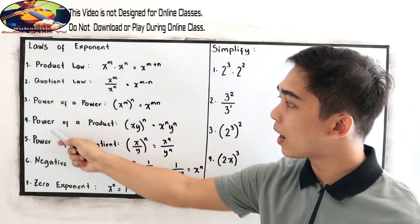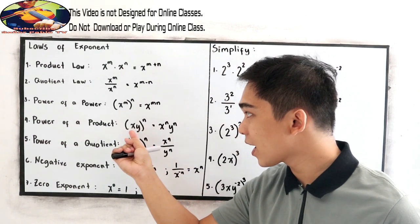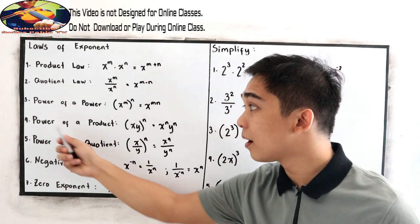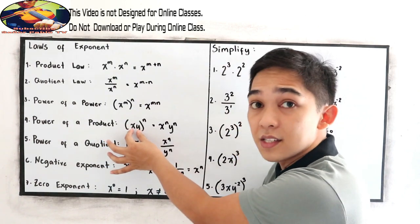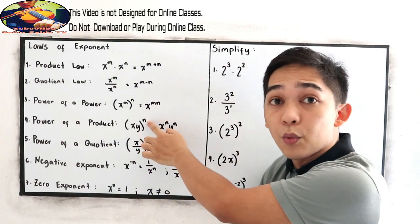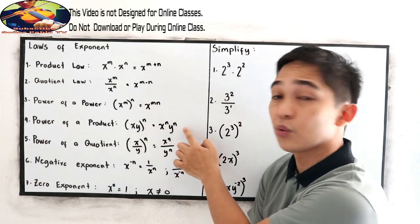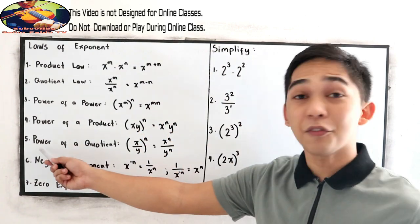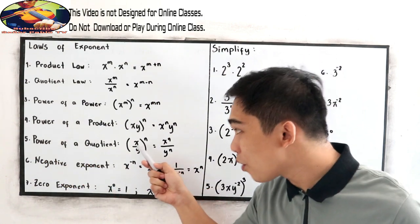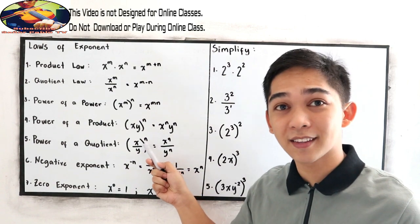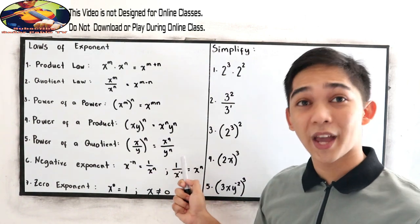The fourth law is power of a product: quantity xy raised to n. We have a product inside the parenthesis with an exponent, so that becomes x raised to n times y raised to n. The fifth is power of a quotient: a quotient raised to an exponent gives x raised to n over y raised to n.